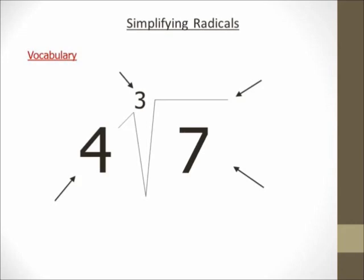In your notes there, I have 4 cubed root of 7 — that's how I read this. 4 is going to be my coefficient, and that's the big number out front. So when I say something like 5x or 10x, the 5 or the 10, that's the coefficient. Same thing goes here — the big number that's out in front of the radical, and that's the checkmark-looking thing. The thing that looks like a checkmark, or some people call it a square root symbol, is actually called a radical in general terms.